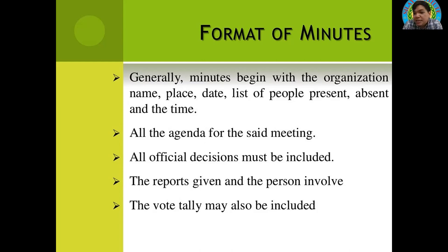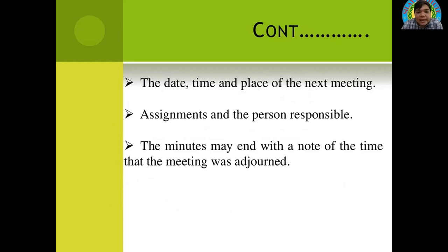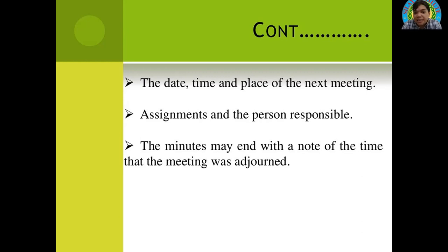Also include the vote tally if there is voting in the meeting — that is very important. The time, date, and place of the next meeting are also included in the minutes. When everyone is done with the meeting, the presiding officer will suggest the venue and date for the next meeting. Assignments and persons' responsibilities are also recorded. The minutes may end with a note of the time the meeting was adjourned.